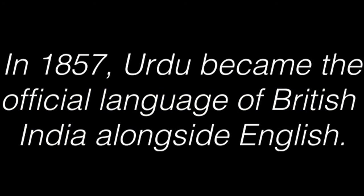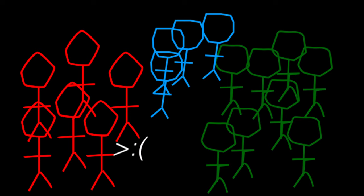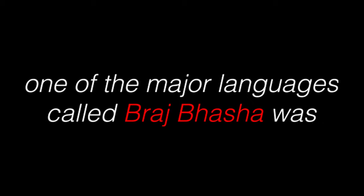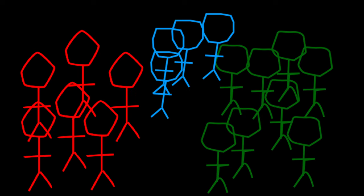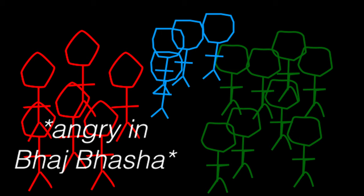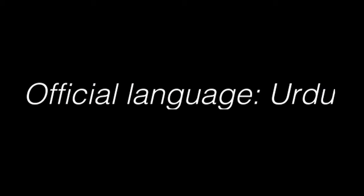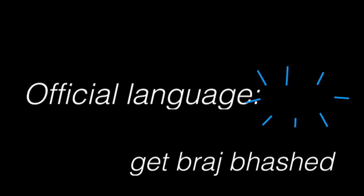In 1857, Urdu became the official language of British India alongside English. This action angered Hindus, who believed that the language should have been written in the Devanagari script. Before the switch to literary Hindustani in the 19th century, one of the major languages called Braj Bhasha was predominantly spoken in north central India and was spoken in Delhi, also referred to as the Delhi dialect. Efforts to promote a Devanagari version of this Delhi dialect started gaining traction around 1880 in an attempt to displace Urdu of its official position. Because of these efforts, two new languages arose.